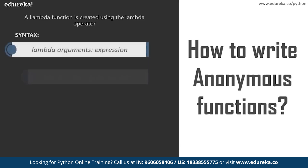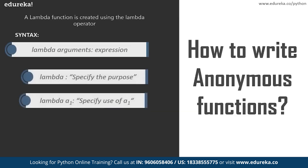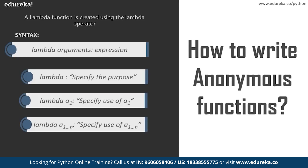The first thing that you need to specify is the Lambda keyword, and following that you'll have to specify the arguments or the inputs, and finally after the colon symbol, you'll have to specify the expression that needs to be solved. Lambda expressions can take any number of arguments. My first example is a Lambda expression without any arguments; in the second example, I've taken a Lambda expression with just one argument a1. Finally, I'm demonstrating a Lambda expression which has inputs from a1 to an. Just remember that all your arguments or inputs need to be separated by a comma.